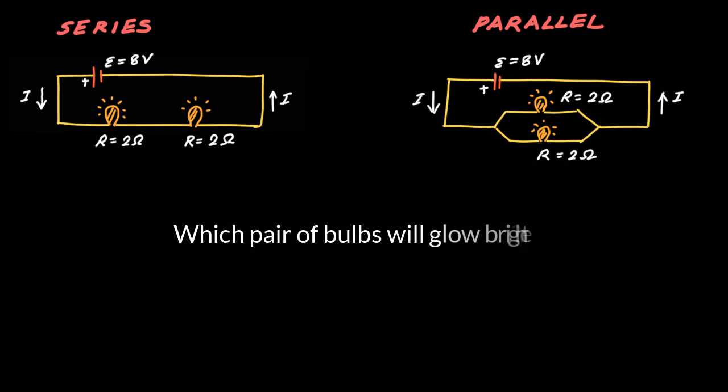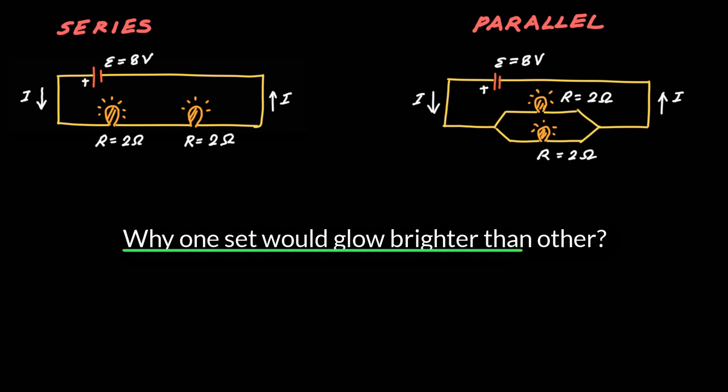The question is, which pair of bulbs will glow brighter, the one in series or the one in parallel? We'll find that out soon, but the more important question is why one set would glow brighter than the other?